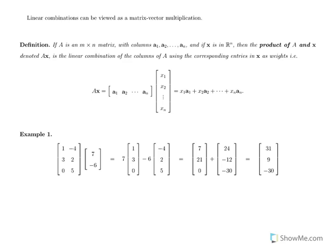If A is an m by n matrix — meaning m rows and n columns — with columns A1 to An (those are vectors), and if X is a vector in Rn, meaning there are n real numbers, then the product of A and X, denoted A times X, is the linear combination of the columns of A using the corresponding entries in X as weights.